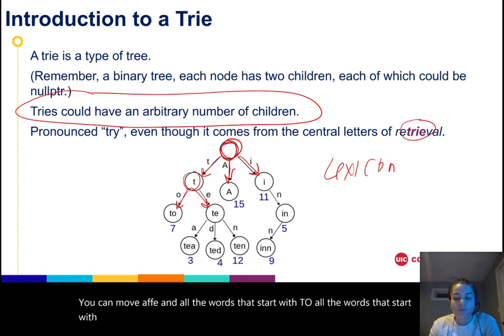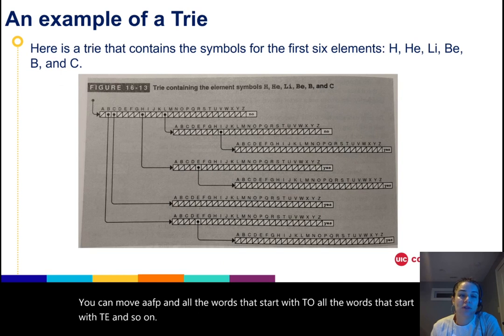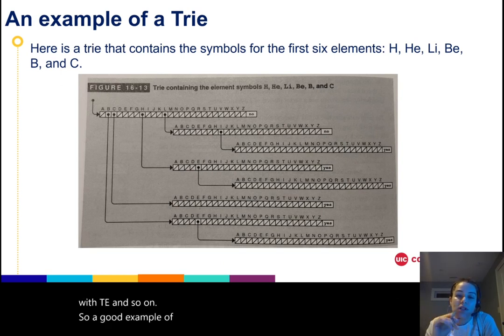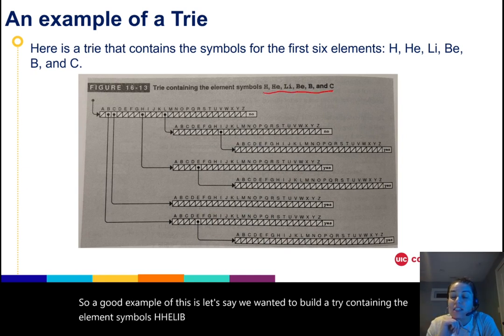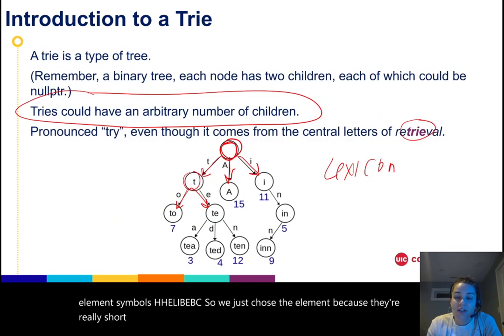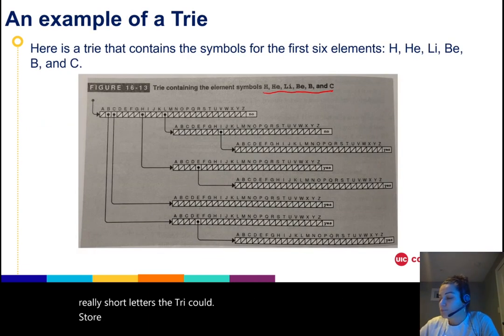A good example of this is let's say we wanted to build a trie containing the element symbols: H, He, Li, Be, B, and C. We just chose the elements because they're really short letters. The trie could store any set of dictionary words that you would need to.